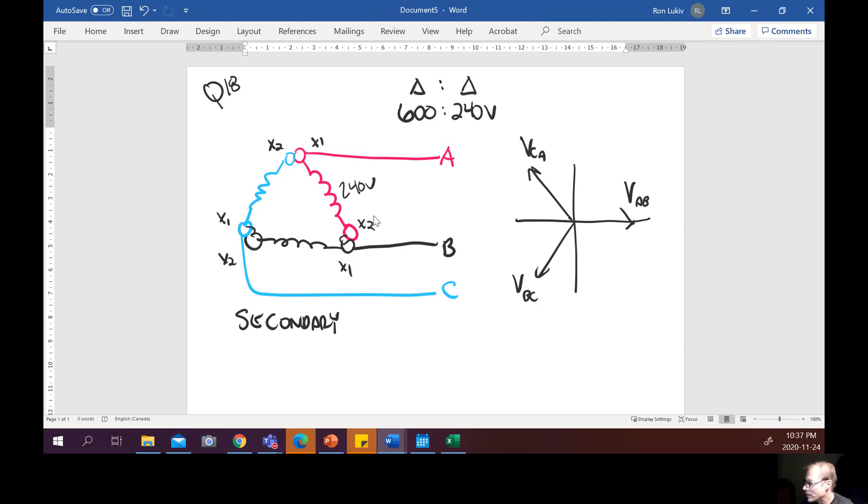x1 to x2 around in a clockwise fashion here and line A would come from the x1 of the phase A transformer, line B would connect to x1 of the phase B transformer and then line C would connect to the C transformer x1. And what that would look like on a phasor diagram is we got voltage AB at zero, voltage BC at 240 degrees and voltage CA at 120 degrees so that should be all good.